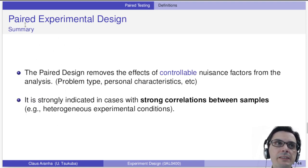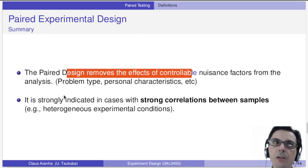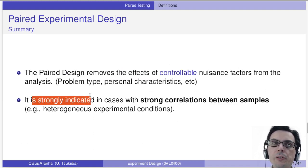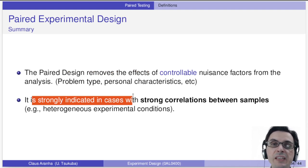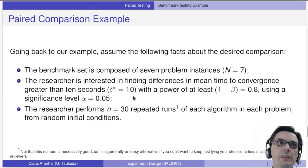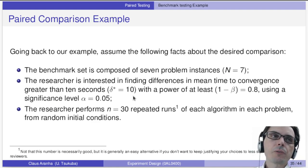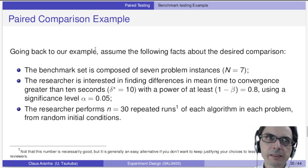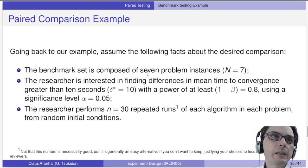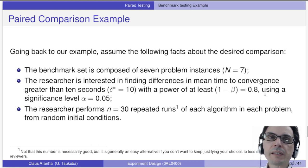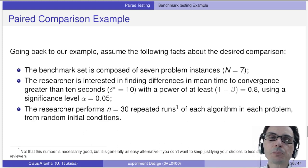To summarize, the paired experimental design removes the effect of controllable nuisance factors (problem type, personal characteristics, etc.) and is strongly recommended when there is a strong correlation of samples across treatments. In our example: we have a benchmark of seven problems, we want to detect differences in mean time to convergence greater than 10 seconds, with a power of at least 0.8 (β = 0.2) and significance level α = 0.05. We perform 30 repeated runs per problem just to reduce the error of each observation.